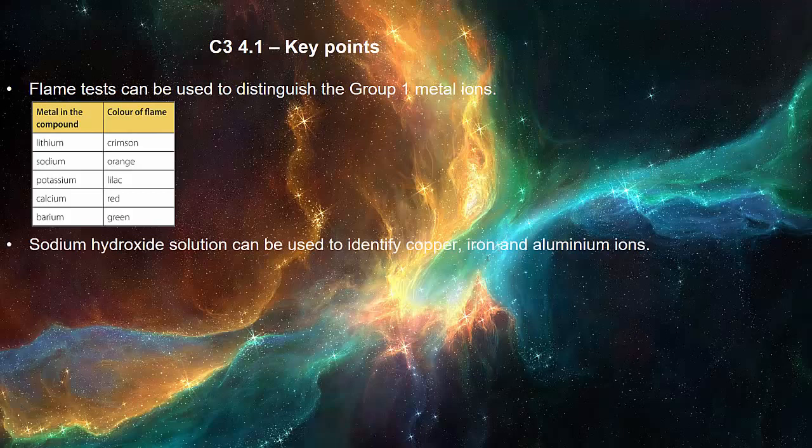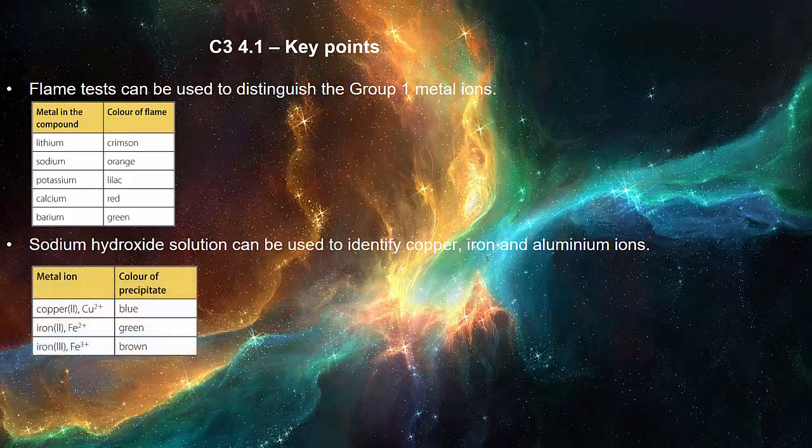Sodium hydroxide solution can be used to identify copper, iron and aluminium ions. The colour of precipitate for copper 2 is blue, for iron 2 is green and iron 3 is brown.